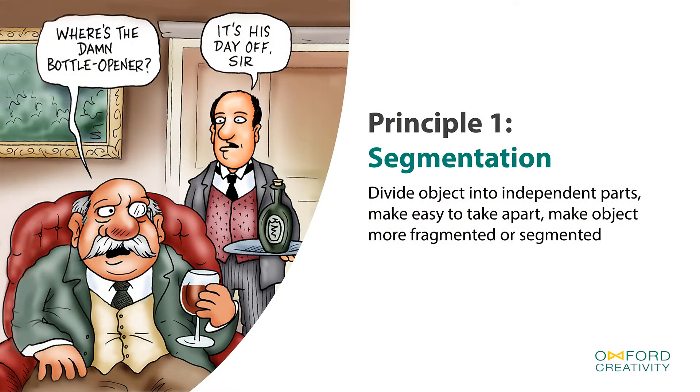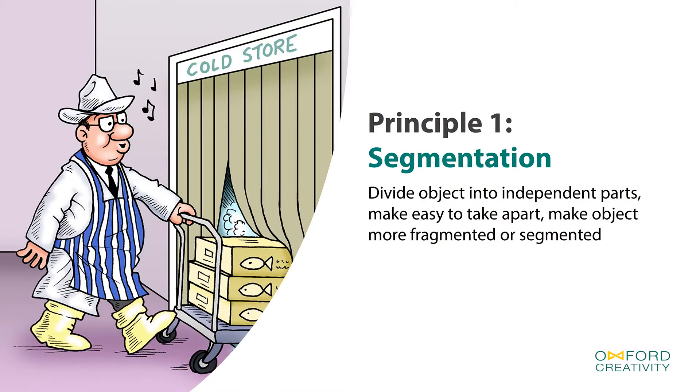This illustrates principle number one: segmentation. Segmentation can be physical things or management things, and this is a management example — the idea that you segment people's jobs so everyone has a different job. We use it for situations where we need to be adaptable, where we have to adjust to different conditions. Principle number one, segmentation, is basically saying everything gets smaller, which we understand very much now in science and technology. Segmenting a door makes it very clever, very easy to be there and not there — it's there when we need to keep the cold in, and it's not there when we need to walk through it.